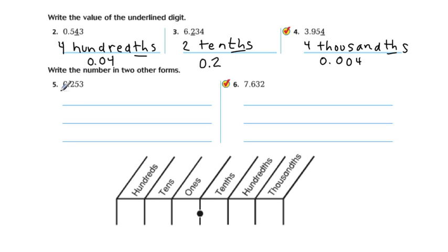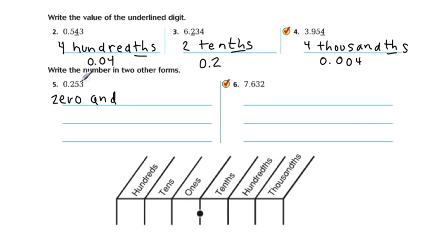So that's going to help us. When you see the decimal, you use the word 'and.' And then it's 253 — if it ends in the thousandths place, it's 253 thousandths. And so it's two hundred fifty—